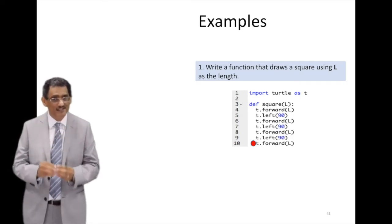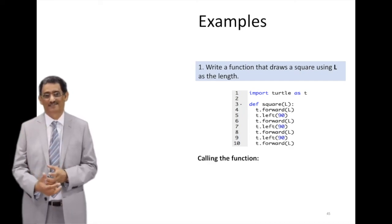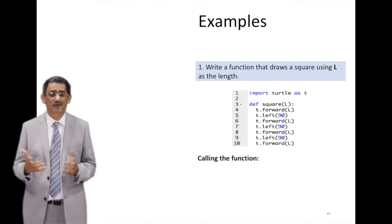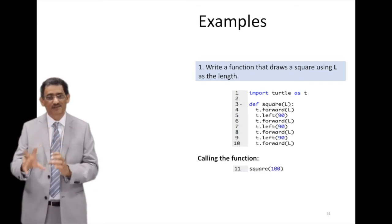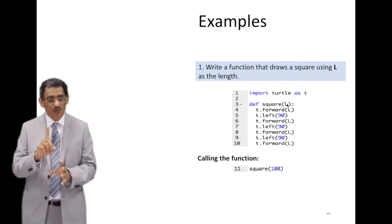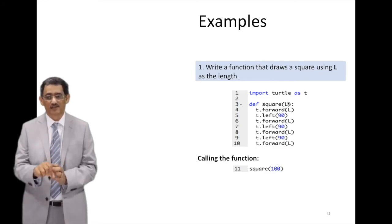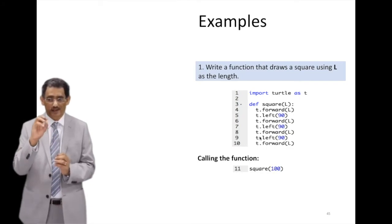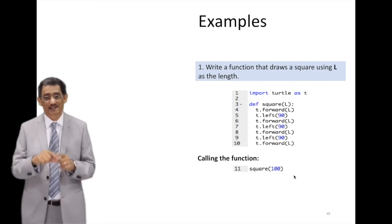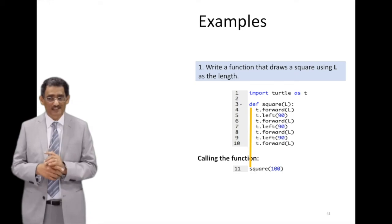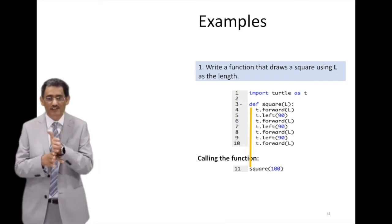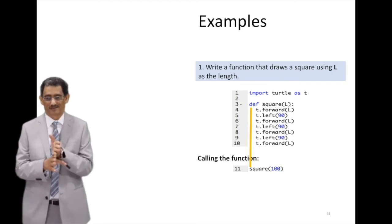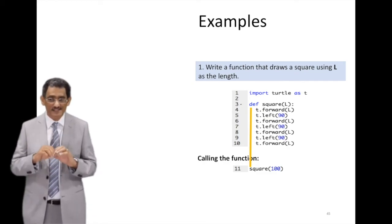And this is the function. Now, we have created the function. Creating the function is one thing and calling it or using it is another thing. So if I want to use that function, how can I use the function? I just need the name of that function, then bracket and pass the values that are required by the function. We know this function needs one value for one variable called L. So if I say square 100, this will pass it to the function and it will draw a square with the length of 100 pixels. One important thing you notice - the def and square, the S of square, they are all on the same vertical line. Why? Because they are at the same level.